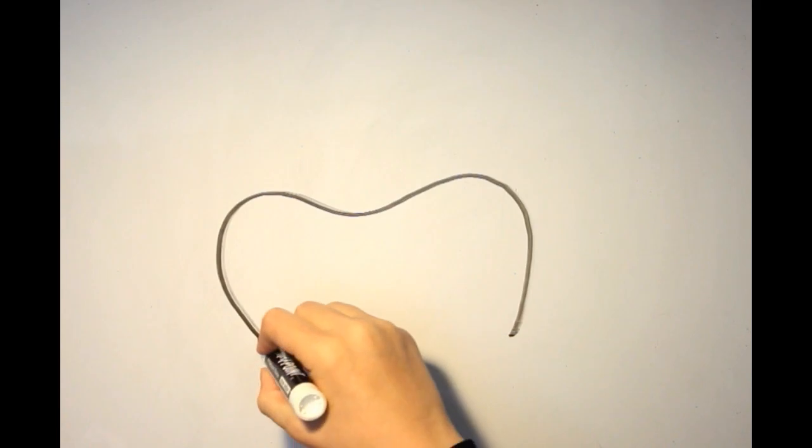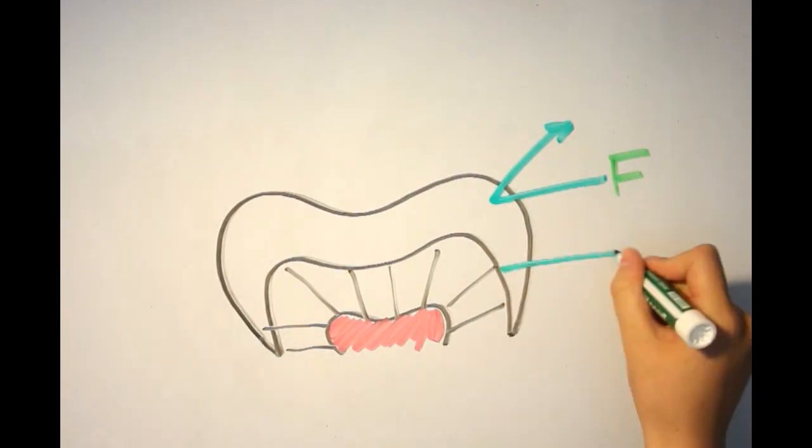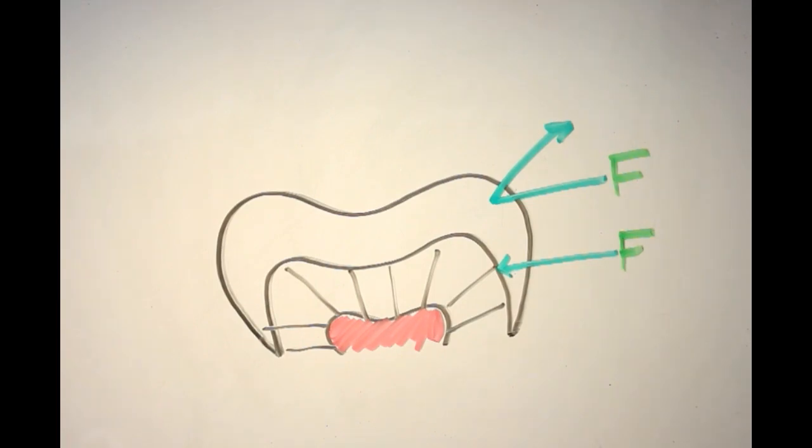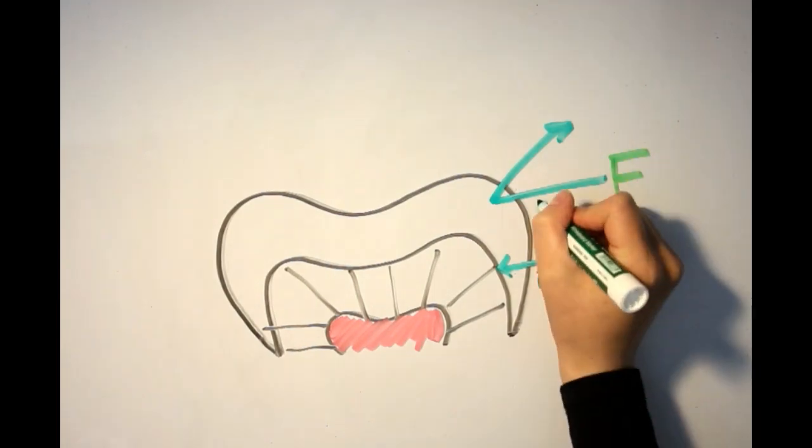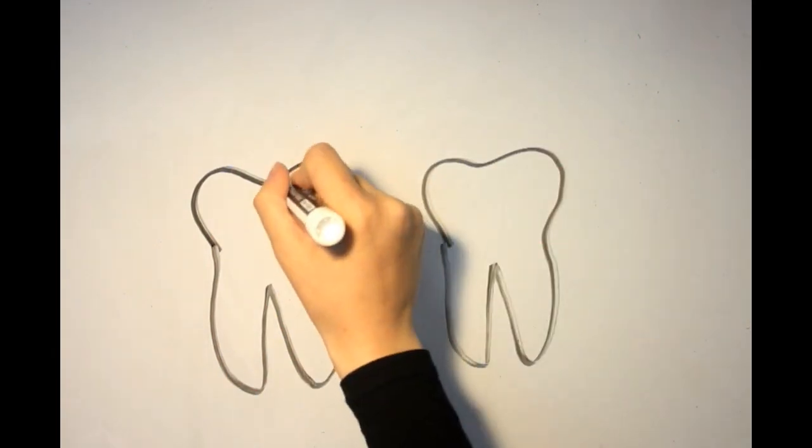Besides being the hardest tissue in the body, enamel is also semi-permeable, allowing small molecules and ions to pass through. The innermost enamel is more permeable than the outermost enamel. Enamel has no collagen, making it inflexible and brittle.